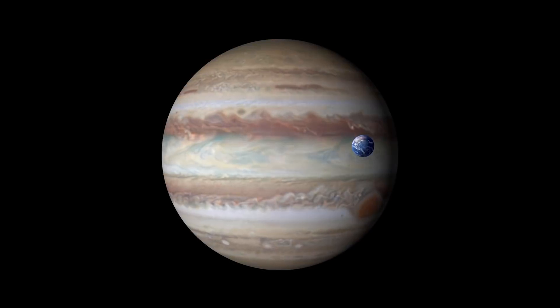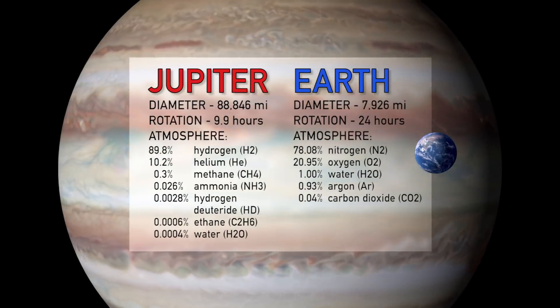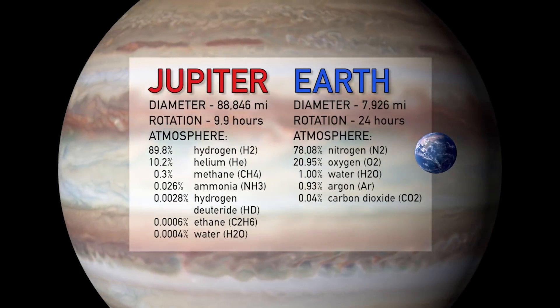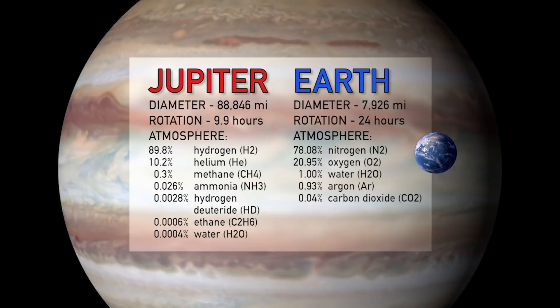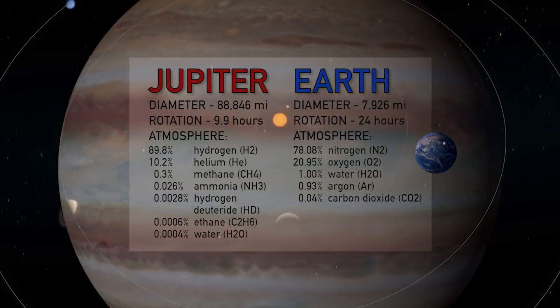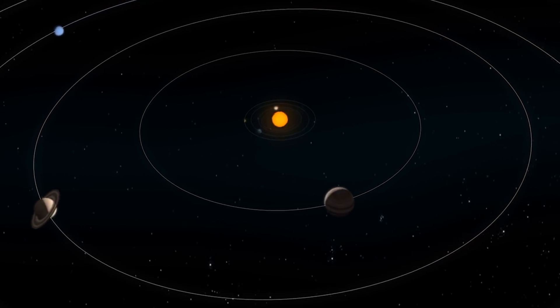Fluid mechanics is hopefully the same everywhere in the universe, but Jupiter and Earth are very different. Jupiter is much bigger, it rotates a lot faster, they're made of different material, and Jupiter is much further away from the Sun than the Earth is.